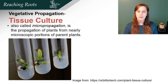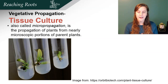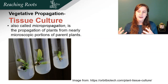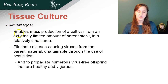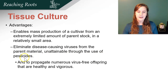Another way scientists propagate plants is through tissue culture, also called micropropagation — the propagation of plants from nearly microscopic portions of the parent plant. Because plants have totipotency, from just a few cells you can generate a whole new plant. This is especially useful if a plant has a disease issue, as you can create completely disease-free plants. Advantages include mass production of a cultivar from an extremely limited amount of parent stock in a small area, eliminating disease-causing viruses, bacteria, or fungi from parent material — unattainable through the use of pesticides — and producing numerous virus-free offspring that are healthy and vigorous.